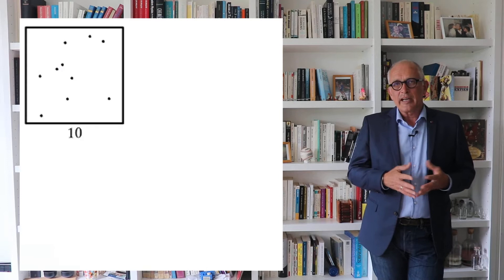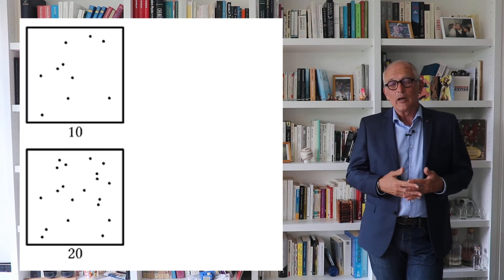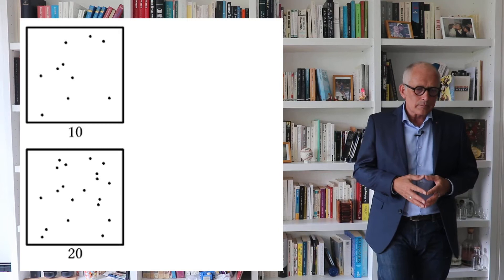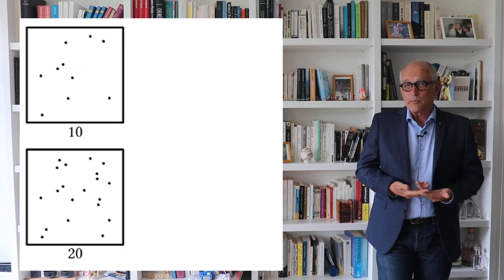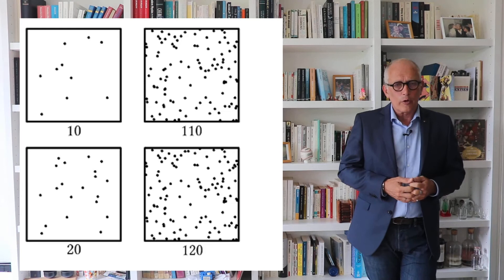I can also give you an optical equivalent. Consider 10 dots in a square. If I show you a second square with 20 dots — so I've added 10 dots — it's obvious that the density of dots has increased and this increase is perfectly visible. But if I start with 110 points and add 10 points, you barely see the difference. So 10 points is meaningful in one circumstance and not meaningful in another.